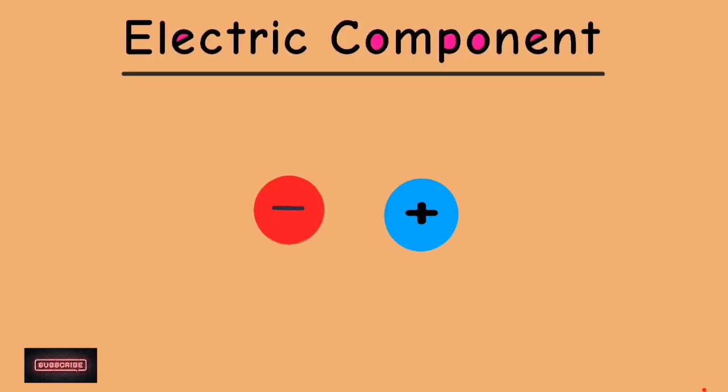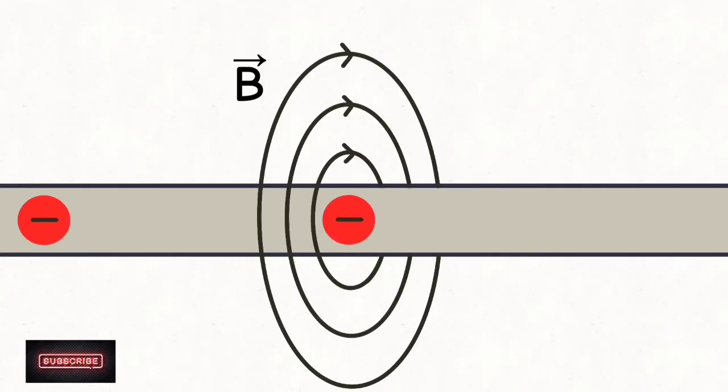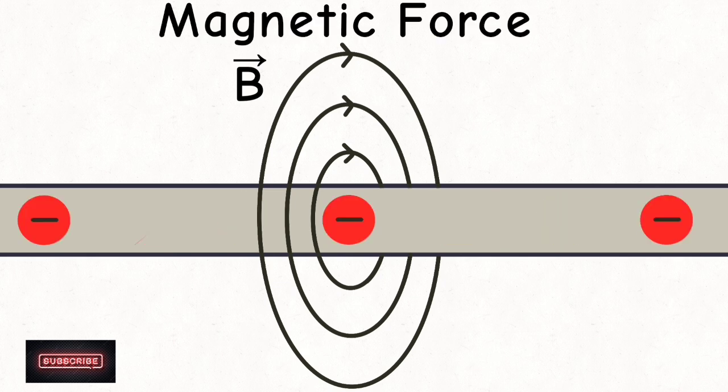The electric component acts between charged particles whether they are moving or stationary, creating a field by which the charges can influence each other. But once set into motion, these charged particles begin to display the second component, the magnetic force. The particles create a magnetic field around them as they move.